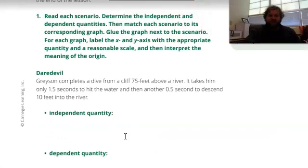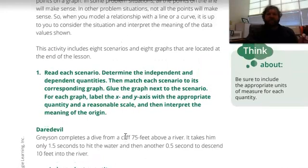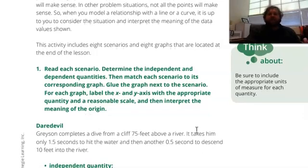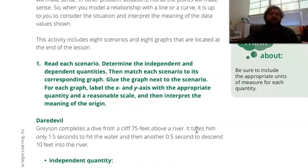Let's look at the first one together. Read it first, always. When there are words, read them no matter what. Our first scenario says Daredevil. Grayson completes a dive from a cliff 75 feet above a river. It takes him only 1.5 seconds to hit the water, and then another 0.5 seconds to descend 10 feet into the river. What's happening here is this guy is literally jumping off a cliff into a river. We know how long it takes him to fall and hit the water, and we also know that he goes under the water afterwards.